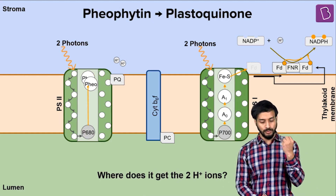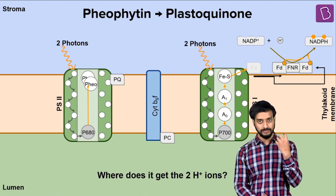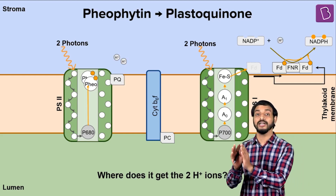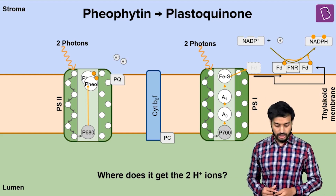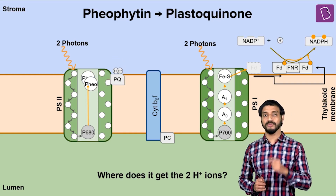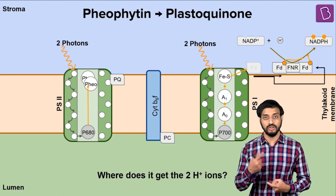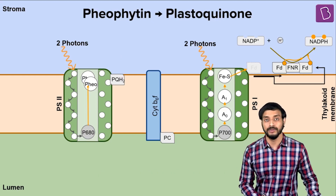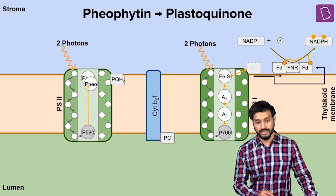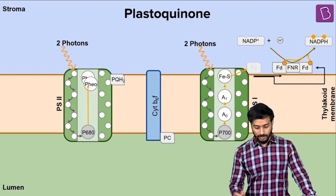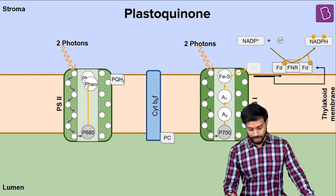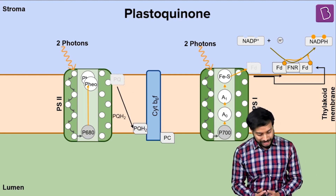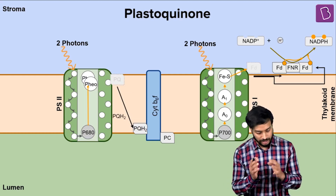PQ takes two electrons and two protons. Since PQ is at a higher redox potential, the affinity is greater, so two electrons and two protons are transferred. After receiving these, PQ becomes PQH2. This PQH2 is special — it can move across the membrane and goes to the next complex, cytochrome b6f complex.